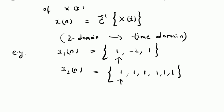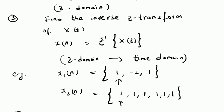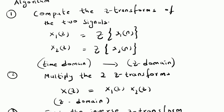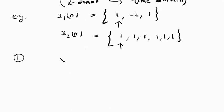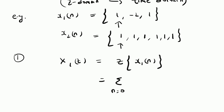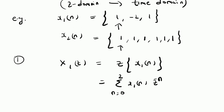In step one, we compute the Z-transforms of the two signals. X1(z) is the Z-transform of x1[n]. By applying the definition of the Z-transform, this equals the summation from n=0 to 2 of x1[n] z^(-n). Since x1[n] = {1, -2, 1}, the Z-transform is X1(z) = 1 - 2z^(-1) + z^(-2).